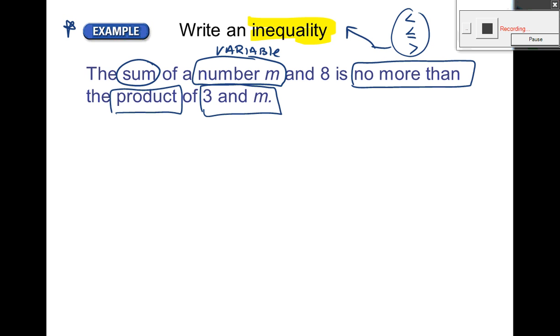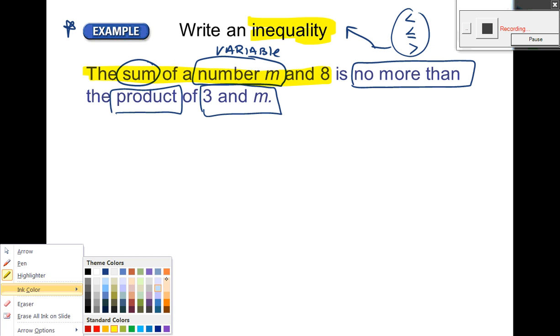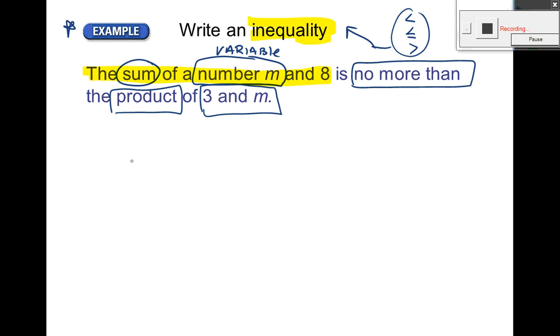So let's do this part first. Let's do the sum of a number M and 8. How would I write that? How would I write that down? There you go. So that's going to be M. Plus 8. I have highlighter right now. Sorry. There we go. M plus 8. Is no more than. Is no more than. What do you think? Yeah. You got it. Less than or equal to. Good. Is no more than.